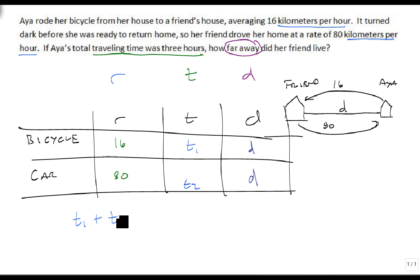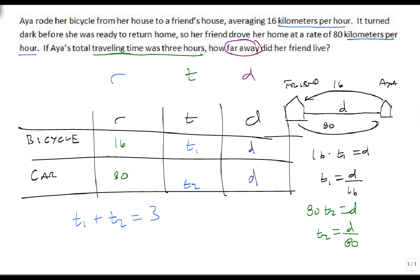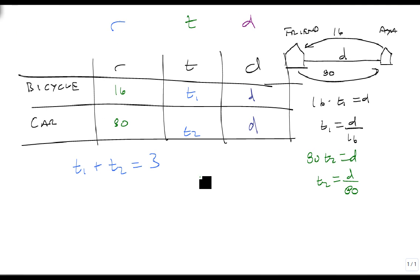What we know is that T1 plus T2 is equal to 3 — the total traveling time is 3 hours. From our first equation, 16 times T1 equals D, so T1 is D over 16. From our second equation, 80 times T2 equals D, so T2 equals D over 80. So our model is T1 plus T2 equals 3, and R times T equals D. This gives us D over 16 plus D over 80 equals 3.